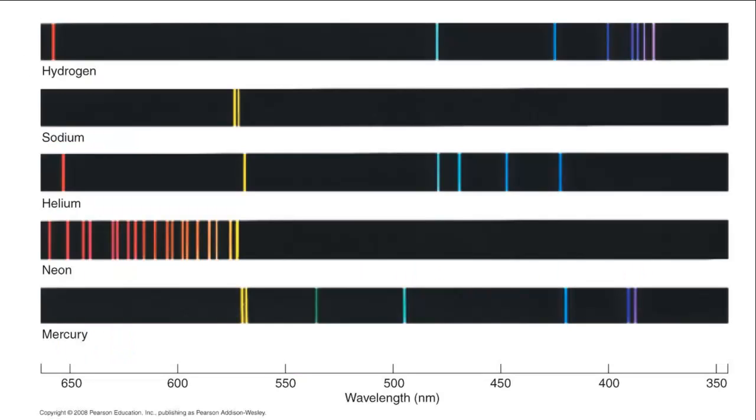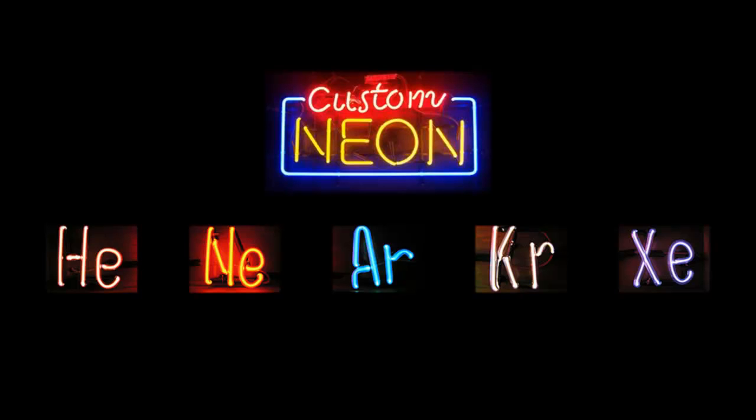Because the quantization levels for each element in the periodic table are unique, each element has a unique emission spectrum. It's like a signature. The so-called multi-colored neon signs actually do not always use neon gas, but different gases, such as helium, neon, argon, krypton, and xenon, to produce different colors.